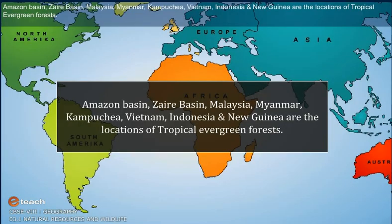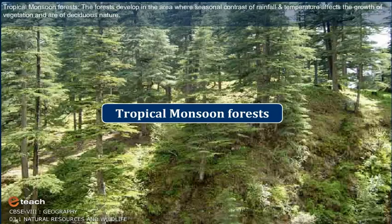Amazon Basin, Zaire Basin, Malaysia, Myanmar, Kampuchea, Vietnam, Indonesia and New Guinea are the locations of tropical evergreen forest.